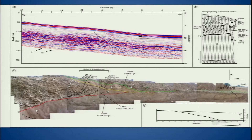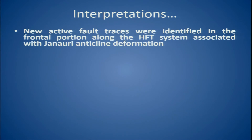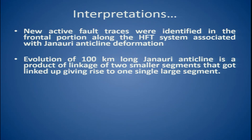You can see F1 and F2, where F2 has taken up at least the younger event. You can compare what we saw in the GPR with what we see in the trench section. The interpretations are: four new active fault traces were identified in the frontal portion along the HFT system and associated Janowri anticline. The evolution of the 100 kilometer long Janowri anticline is a product of linkage of two smaller segments, with event one between 2600 and 800 years and event two between 400 and 300 years, the latter probably representing the 1555 AD earthquake.